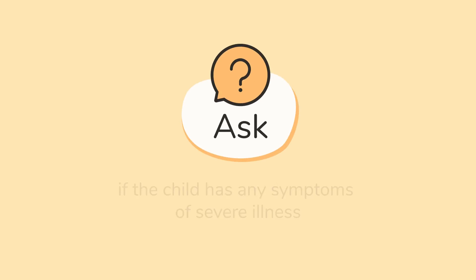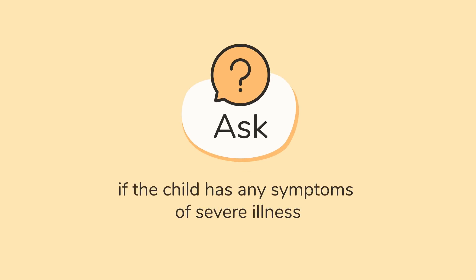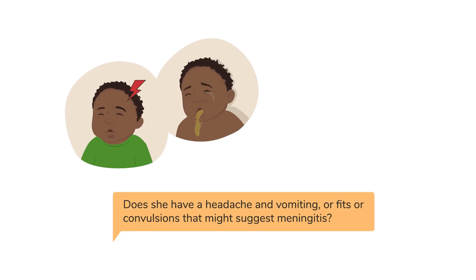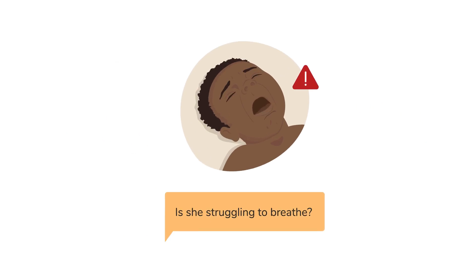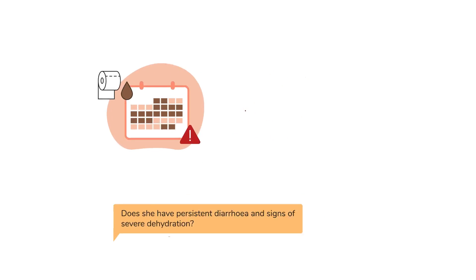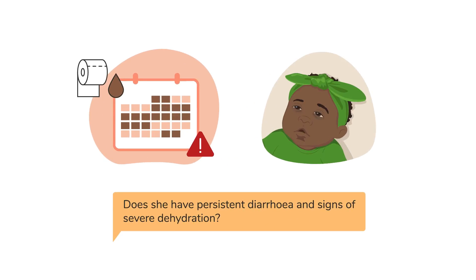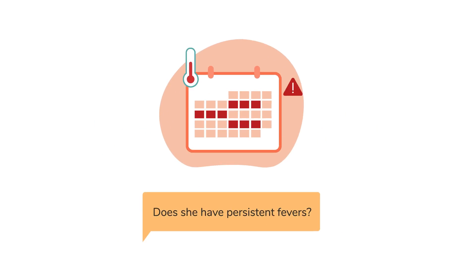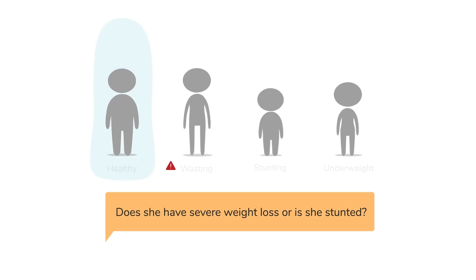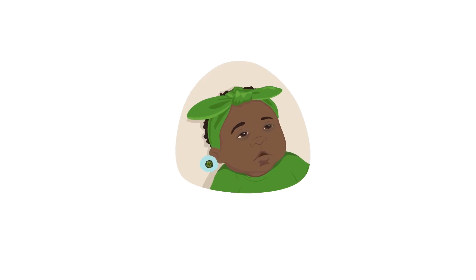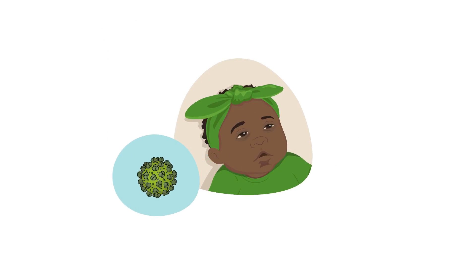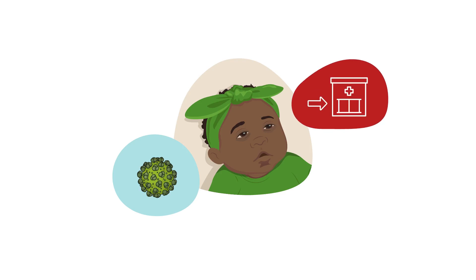Third, find out if the child has any symptoms of severe illness. You can ask: does she have a headache and vomiting, or fits or convulsions that might suggest meningitis? Is she struggling to breathe? Does she have persistent diarrhea and signs of severe dehydration? Does she have persistent fevers? Does she have severe weight loss or is she stunted? Children with HIV are more likely to get severe infections and should be referred urgently to a health facility if they have any of these symptoms.